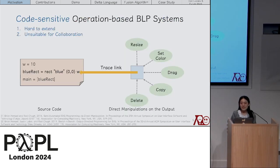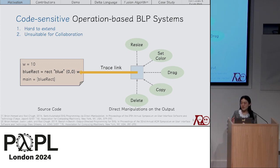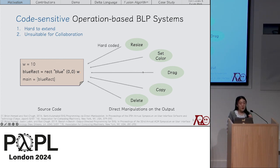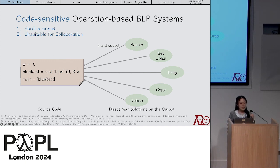Among existing operation-based systems, a notable one is Sketch & Sketch. Although it provides powerful direct manipulations for SVG graphics like alignment and grouping, these manipulations are code-sensitive. Through hard-coded links between source program and output, each direct manipulation requires hard-coded program modifications, making it hard to extend. Users also need to understand the source program, making it less user-friendly for UI designers and unsuitable for programmer-designer collaboration.